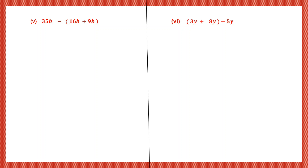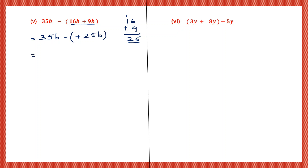Question 5: 35b minus - in brackets we have 16b plus 9b. Remember, we are able to add or subtract because they are all like terms. The first term will remain as it is: 35b minus. Now 16 plus 9: 6 plus 9 is 15, carry 1, 1 plus 1 is 2, so that is 25b. Now since I have minus before the bracket, the sign of the term inside the bracket will change - plus will become minus. So this is minus 25b. So 35 minus 25 is 10b. Question 5 answer is 10b.